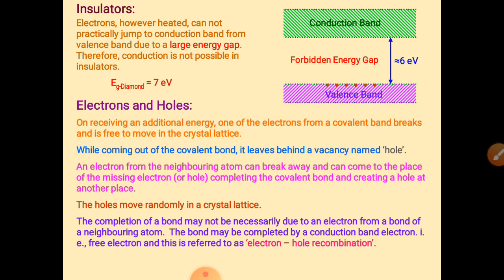Holes never actually move, but by observation we say holes move in the opposite direction to electrons. Whenever an electron encounters a hole — whether in the conduction band or valence band — the electron fills that hole. This process is called electron-hole recombination. Since holes don't move, the electron must move toward the hole.